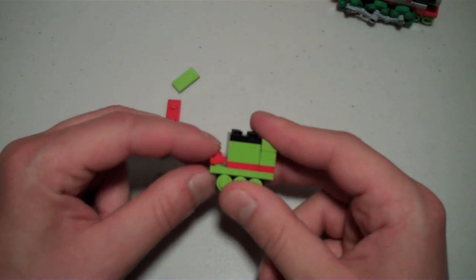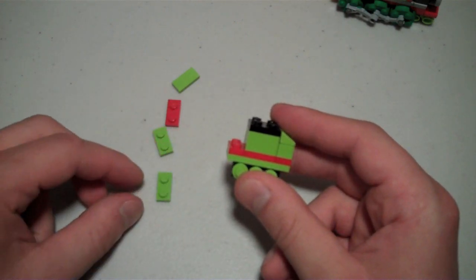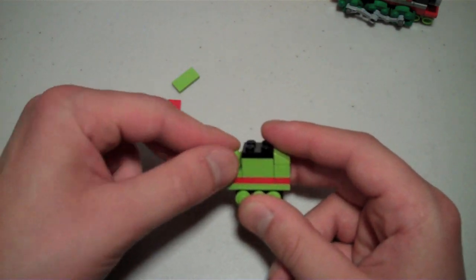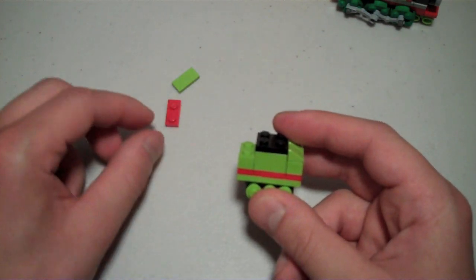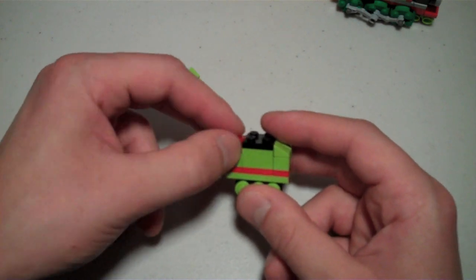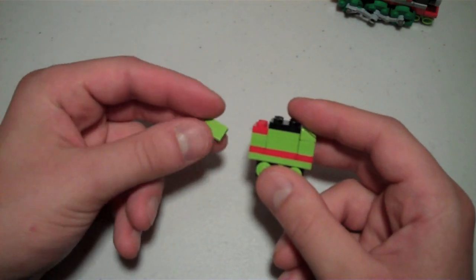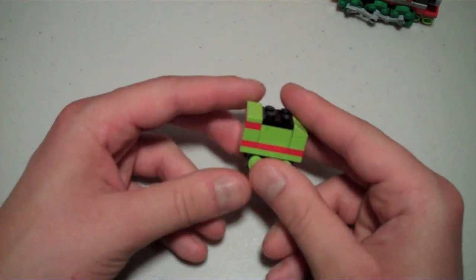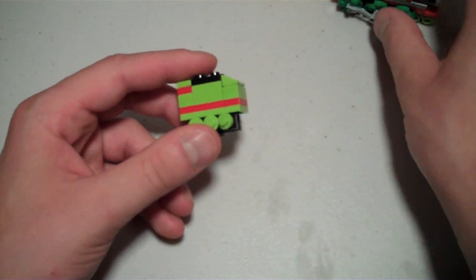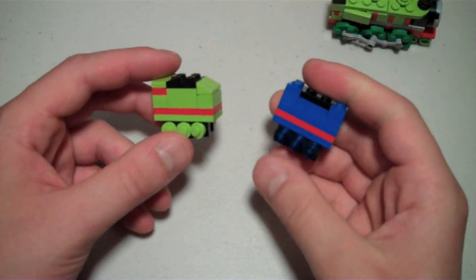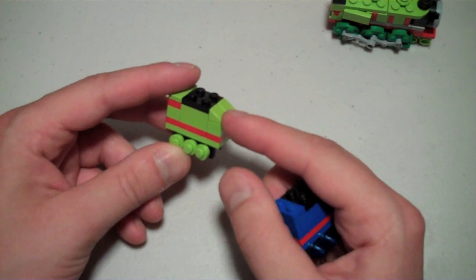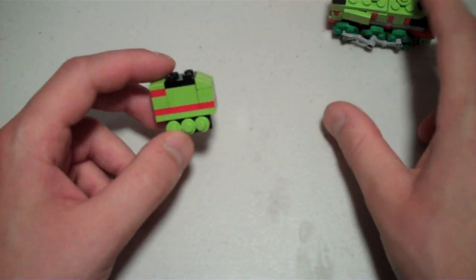Now we just do the same thing on the other side. Except for the top. We take a red 1x2. Place it right there. Two lime green 1x2s on top of each other. A 1x2 red. And then a flat lime green 1x2 tile. And there you have it. There's the tender. It's a little bit different. I have Gordon's tender over here. It's a little bit different. Gordon's is more square. But Henry has this sort of weird indentation over here.